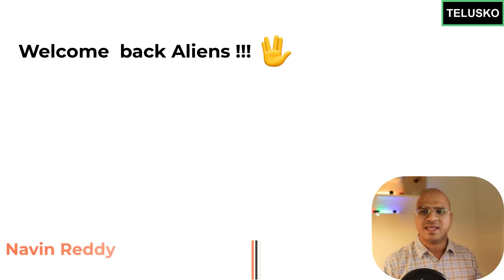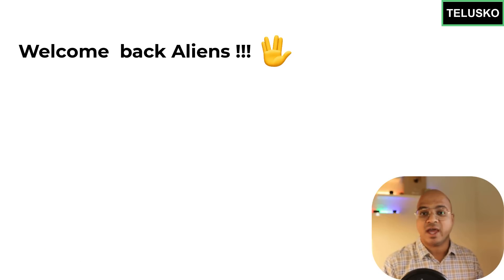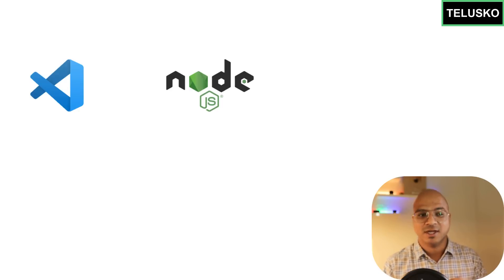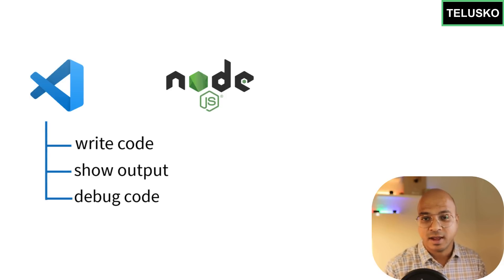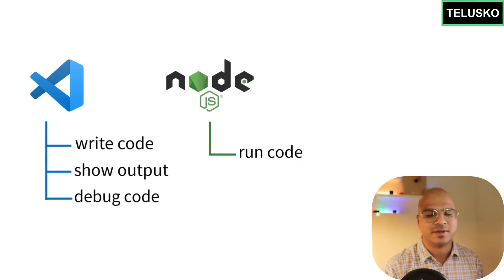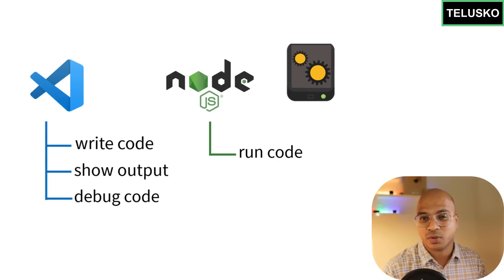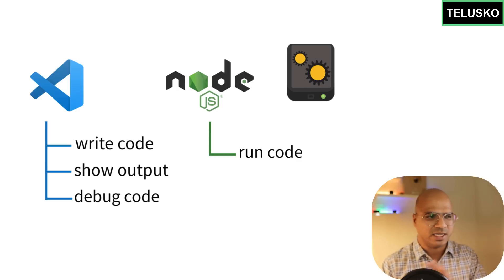Welcome back! My name is Davin Wedi and let's continue with the series on JavaScript. In the earlier videos we talked about what JavaScript is and we did the setup. You'll have VSCode where you write code, see output, and debug, and we use Node.js to run the code since it has a JavaScript engine.